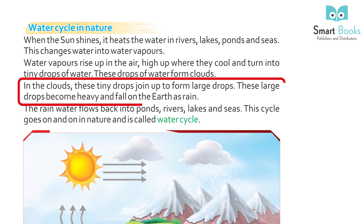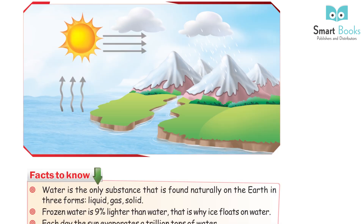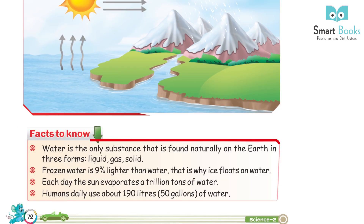These drops of water form clouds. In the clouds, the tiny drops join up to form large drops. These large drops become heavy and fall on the earth as rain. The rainwater flows back into ponds, rivers, lakes, and seas. This cycle goes on and on in nature and is called the water cycle.